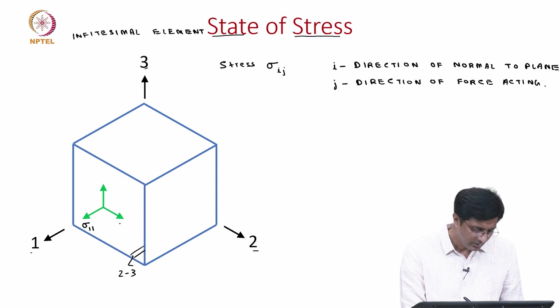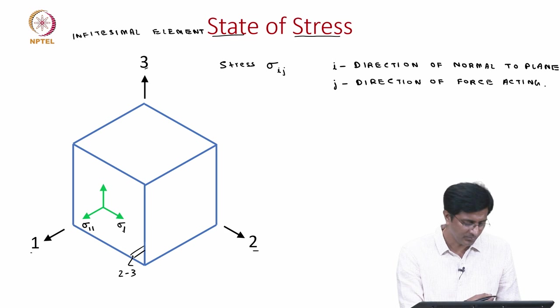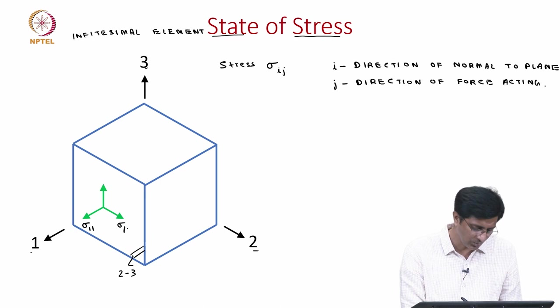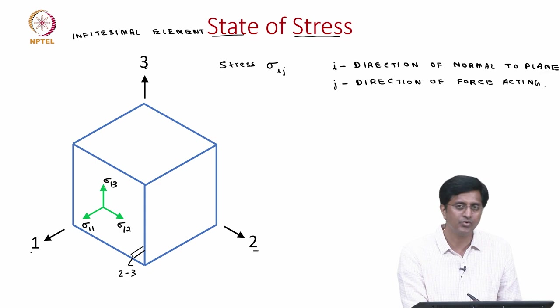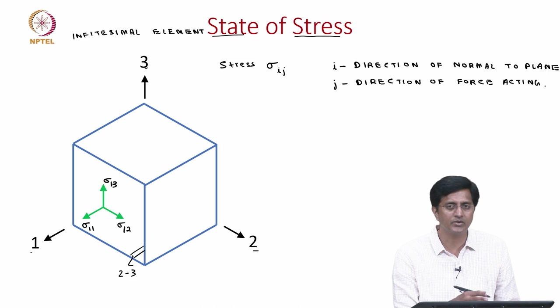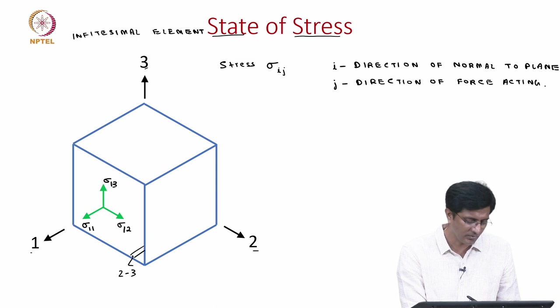Looking at the next arrow, we write sigma_12 — the first subscript 1 represents the plane, but now the force is along direction 2. Similarly, sigma_13 starts with 1 representing the plane and 3 representing the direction of the force. So on this particular plane we have shown 3 components of stresses: sigma_11, sigma_12 and sigma_13.